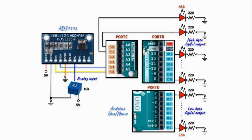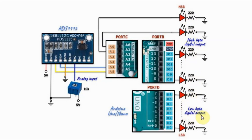This is the circuit diagram of the implemented system. The ADS1115 module is interfaced with the Arduino via port C and the I2C lines. A 10K potentiometer provides the analog input fed into analog input 0 of the module, and the address pin is connected to ground. There are also 16 LEDs displaying the 16-bit result: the low byte is connected to port D, six bits of the high byte to port B, and the most significant two bits to pins of port C.